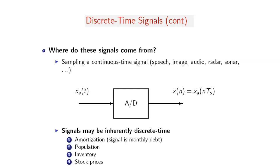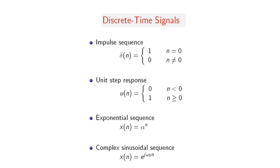Signals may be inherently discrete time, and this can be used for different applications such as amortization, population, inventory, and stock prices. The basic discrete time signals are: the impulse sequence, also called the delta function; the unity step response; the exponential sequence, which may be complex or real; and the complex exponential sequence, X of N equals e to the j omega n. These four basic discrete time signals have wide applications in digital signal processing and can be implemented separately or together with other sequences.